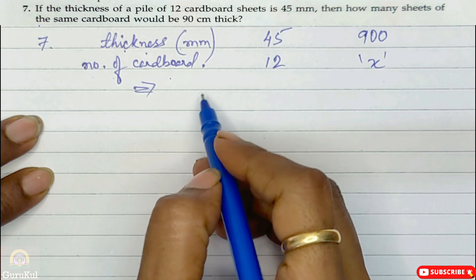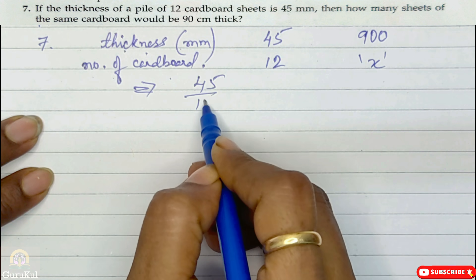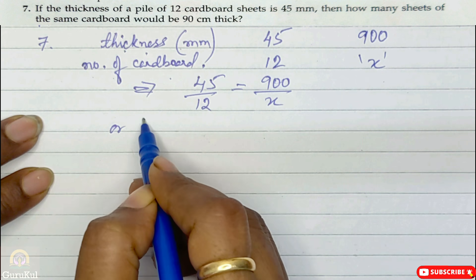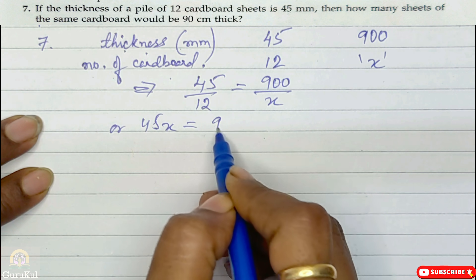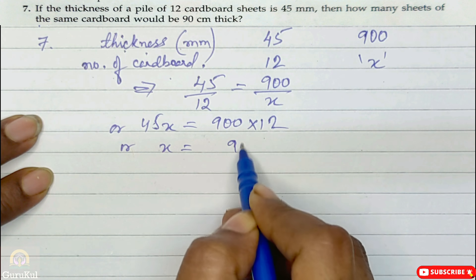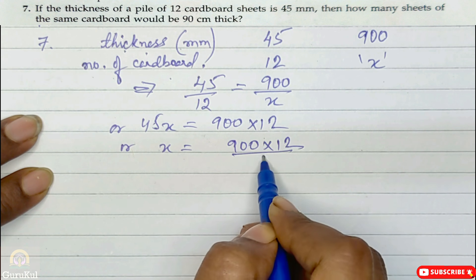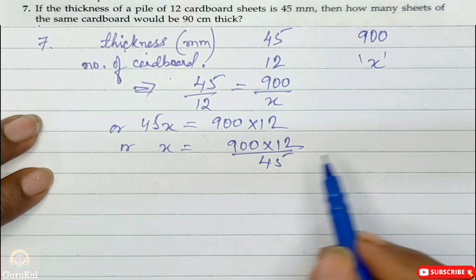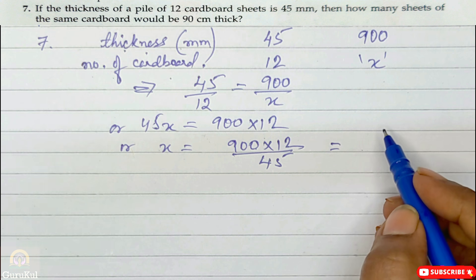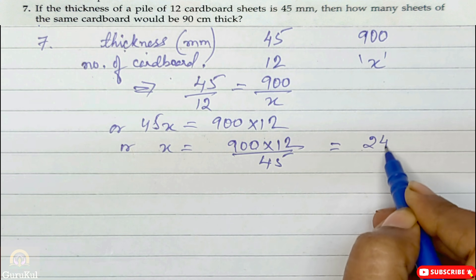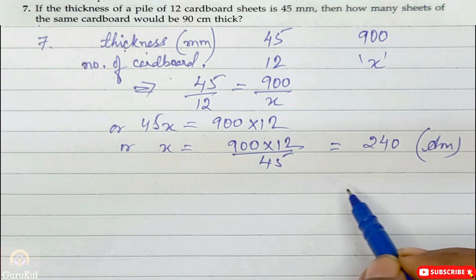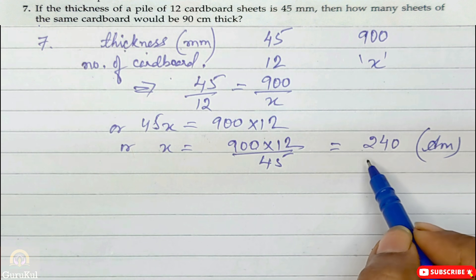So: 45 by 12 = 900 by x, and 45x = 900 into 12, and x = 900 into 12 by 45. After reduction, our final answer is 240. So if the thickness is 900 mm, the number of sheets will be 240.